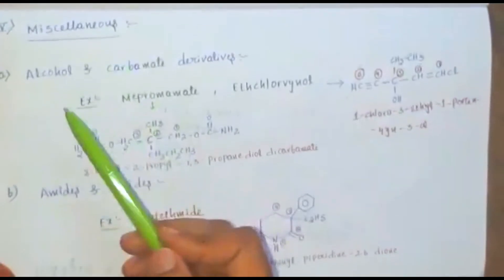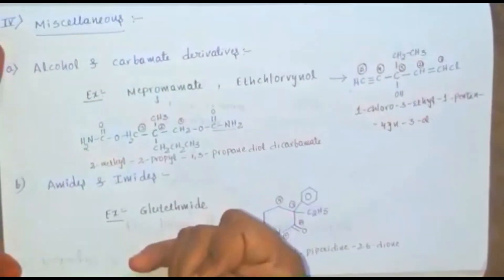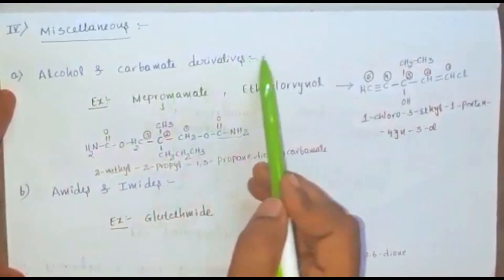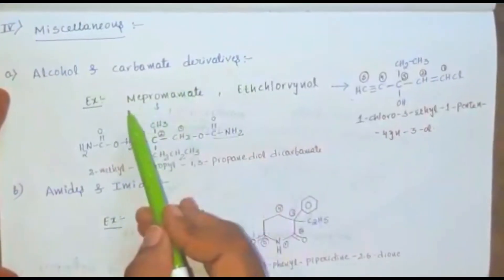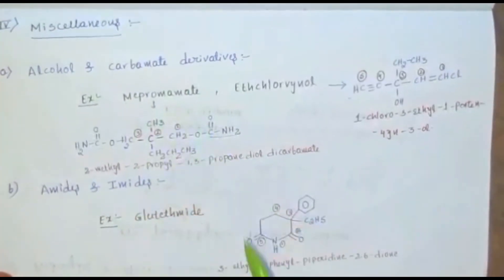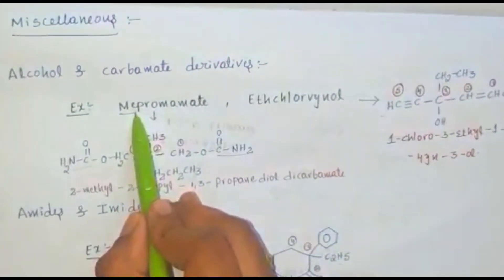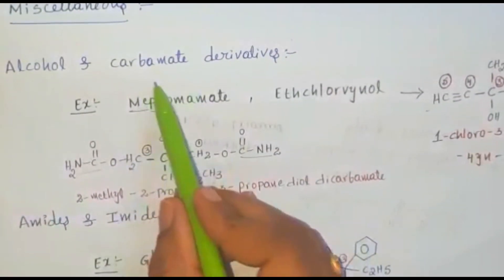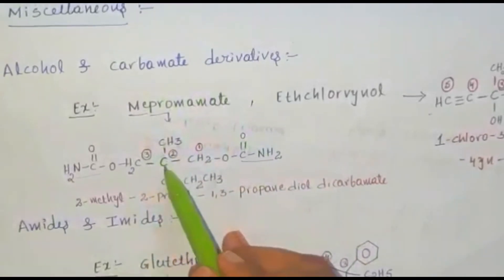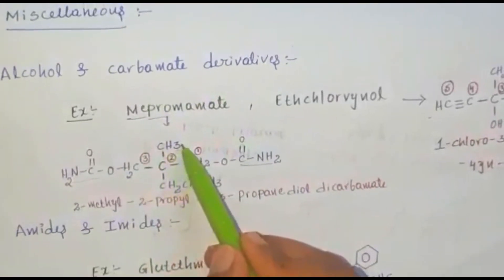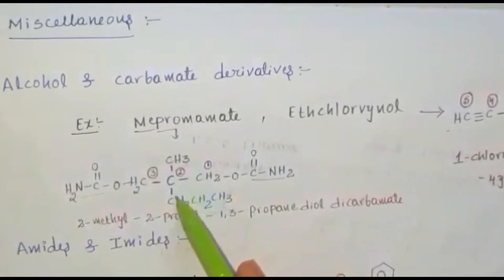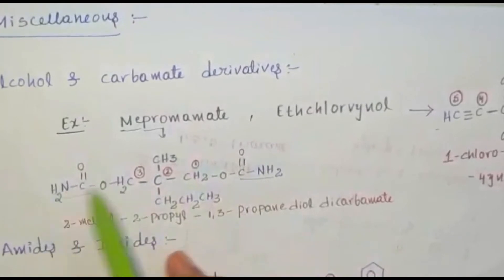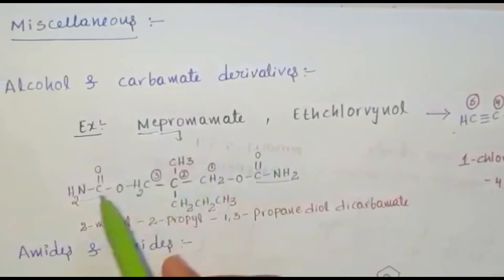The last category is miscellaneous, divided into 3 subclasses. First: alcohol and carbamate derivatives. Carbamate derivative example: meprobamate. 'Me' indicates methyl, 'pro' indicates propyl, 'bamate' indicates carbamate. A carbon attached with a methyl group and a propyl side chain is attached with two dicarbamate groups.